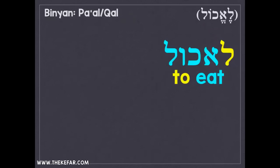The verb 'to eat' in Hebrew is le'echol — you can see it here with the vowels. Le'echol is to eat. For instance, 'I want to eat' is ani rotza le'echol. This is the infinitive, and now to get the root from the infinitive we have two steps we're going to take.